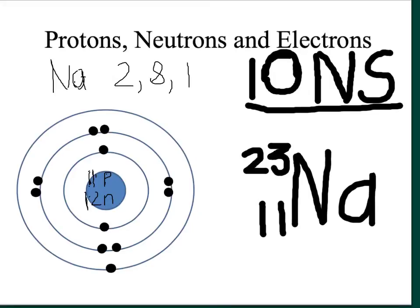So a sodium atom has an electron configuration of 2, 8, 1. It's got 11 electrons, same as the protons, and its electron configuration is 2, 8, 1.